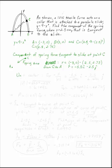Now we need the unit vector. To find it, take the position vector and divide by its magnitude. The magnitude of R is the square root of 5.5 squared plus 2.75 squared. The magnitude of R is the square root of 5.5 squared plus 2.5 squared, which gives 6.1492.